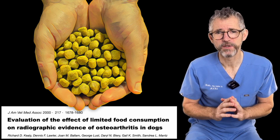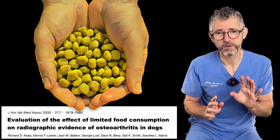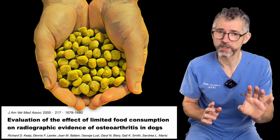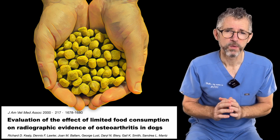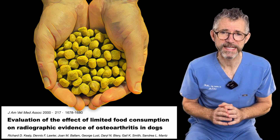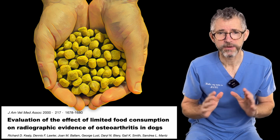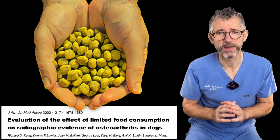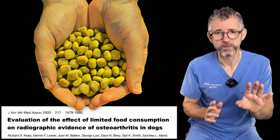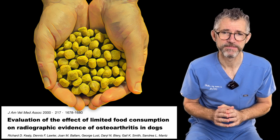Adult dogs' food intake was adjusted so that dogs in Group 1 were overweight but not obese, while dogs in Group 2 were lean, and this is how they remained throughout life — overweight dogs in one group and lean dogs in the other.